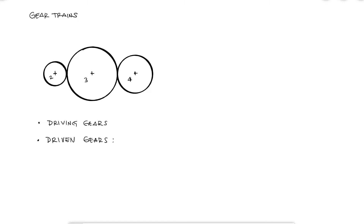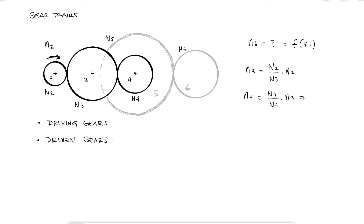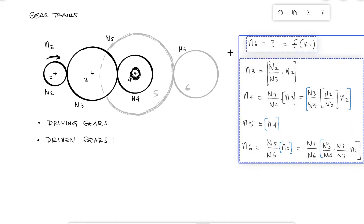For a five-gear train consisting of three gears in the same plane — two, three, and four — and obviously the other two on another plane, we can find out the speed of gear six if we know the speed of gear two and of course the number of teeth or the diameters of the gears. The speed of gear three would be N2 over N3 times the speed of gear two. We know that N4 and N5 rotate at the same speed since they're probably on the same shaft, and the speed of gear six would be N5 over N6 times the speed of gear five.